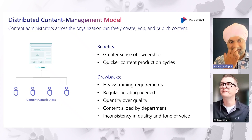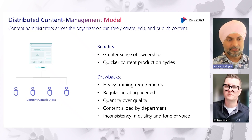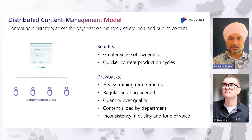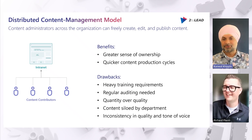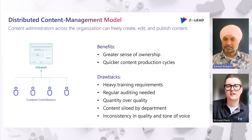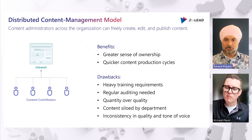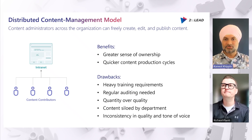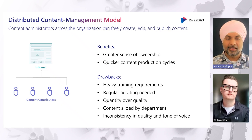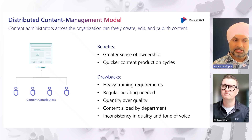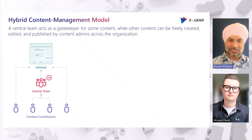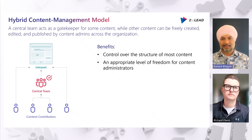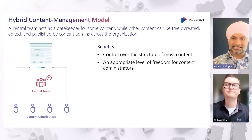We've seen content owners gravitate towards both models — the centralized model, which a lot of smaller organizations prefer, and a few that choose the distributed model. It's also an aspect of trust: you want to make sure the content published resonates with the company's brand and messaging. Generally, we see one or the other, but what you want to work towards is this third model — the hybrid model — where you have a centralized team or central process that allows you to do a little bit of checks and balances as content gets published.